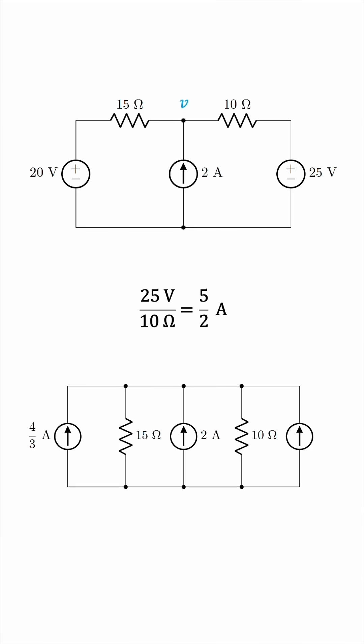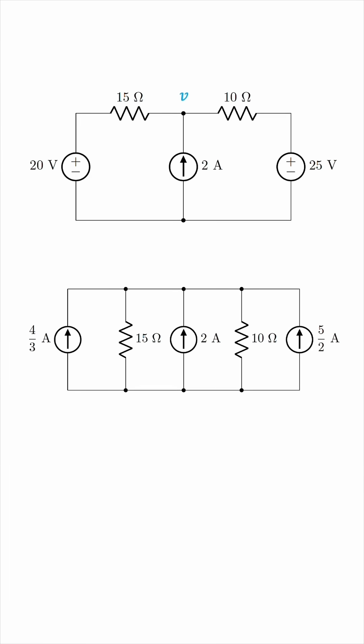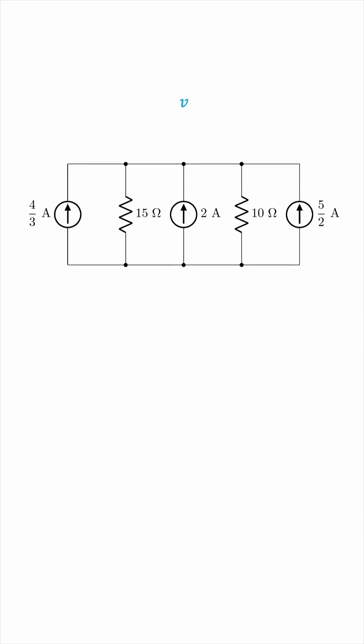Now, here's the important point I wanted to raise. We did not lose the labeled quantity in the process of simplifying the circuit. This voltage V is still intact. Not only that, but we can also simplify the circuit further while retaining this labeled V.